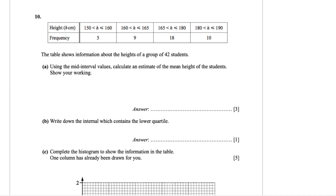Question number 10. The table shows information about the heights of a group of 42 students. From 150 cm to 160 cm there are 5 students, from 160 cm to 165 cm there are 9 students, from 165 cm to 180 cm there are 18 students, and from 180 cm to 190 cm there are 10 students.